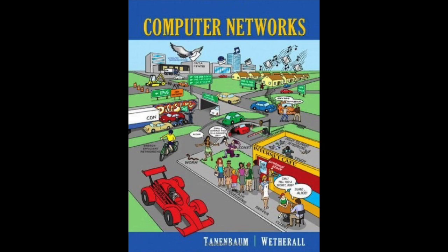To achieve this, the transport layer makes use of the services provided by the network layer. The software and/or hardware within the transport layer that does the work is called the transport entity. The transport entity can be located in the operating system kernel, in a library package bound into network applications, in a separate user process, or even on the network interface card. The first two options are most common on the Internet.